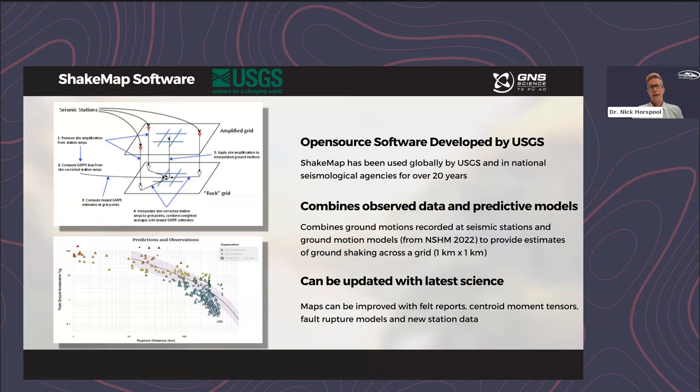We use the ShakeMap software developed by the USGS as the calculation engine underlying Shaking Layers. ShakeMap is open source software that's been developed for over 20 years by the USGS. The USGS produces ShakeMaps globally for magnitude 5 and above earthquakes, and a number of national seismological agencies have their local versions of ShakeMap, much like we're doing here in Aotearoa New Zealand. There's a large community of ShakeMap users and there's sustainability behind the software as well.